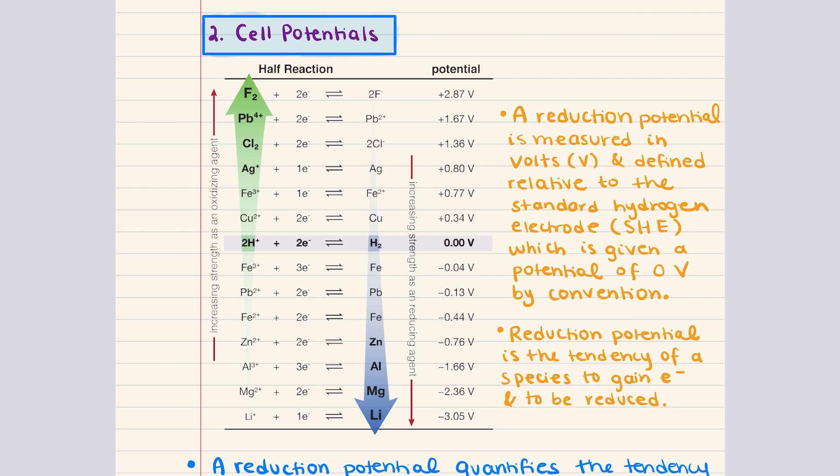The reduction potential of a species indicates its tendency to gain electrons and be reduced. Each species has its own intrinsic reduction potential. The more positive the potential, the greater the tendency for that species to be reduced.